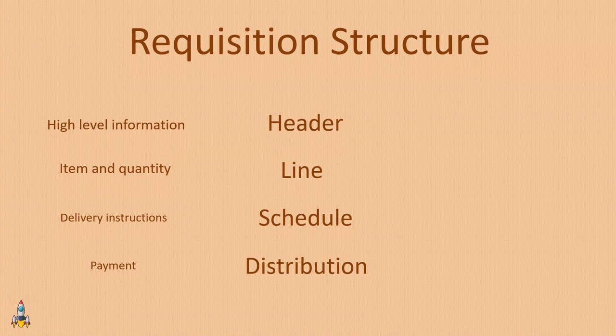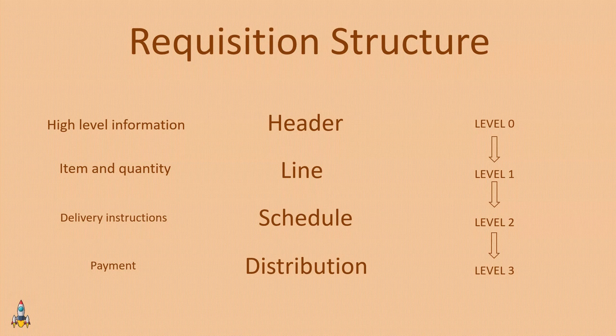From a technical point of view of the Add/Update Requisition component, the requisition header is at level 0, and line is at level 1, meaning for each requisition we can order one or more items or services. Schedule is at level 2, meaning for each line we can have one or more schedules or delivery instructions. Distribution is at level 3, meaning for each schedule we can have one or more distributions.